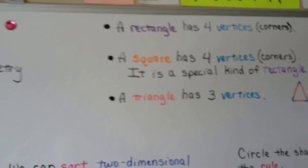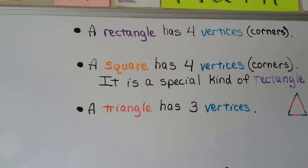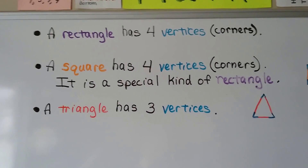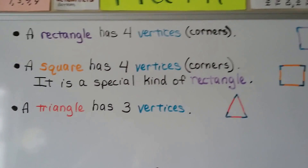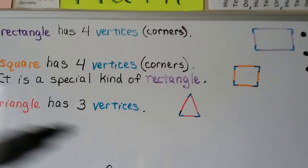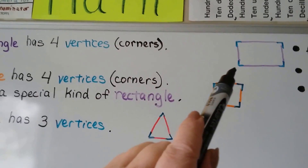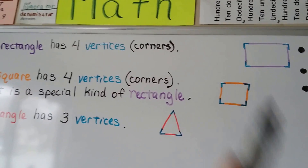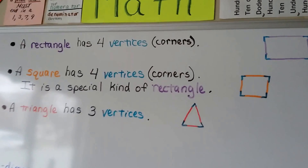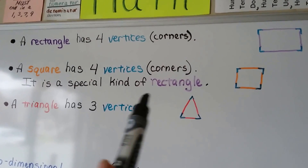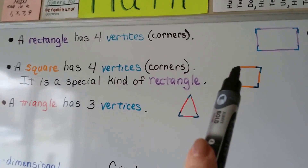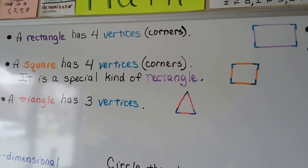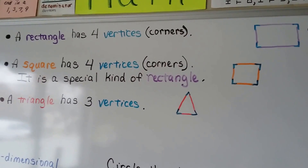A rectangle has four vertices — those are corners. If you look at this rectangle, you'll see the four corners; those are vertices. A square has four vertices: one, two, three, four. It's a special kind of rectangle.